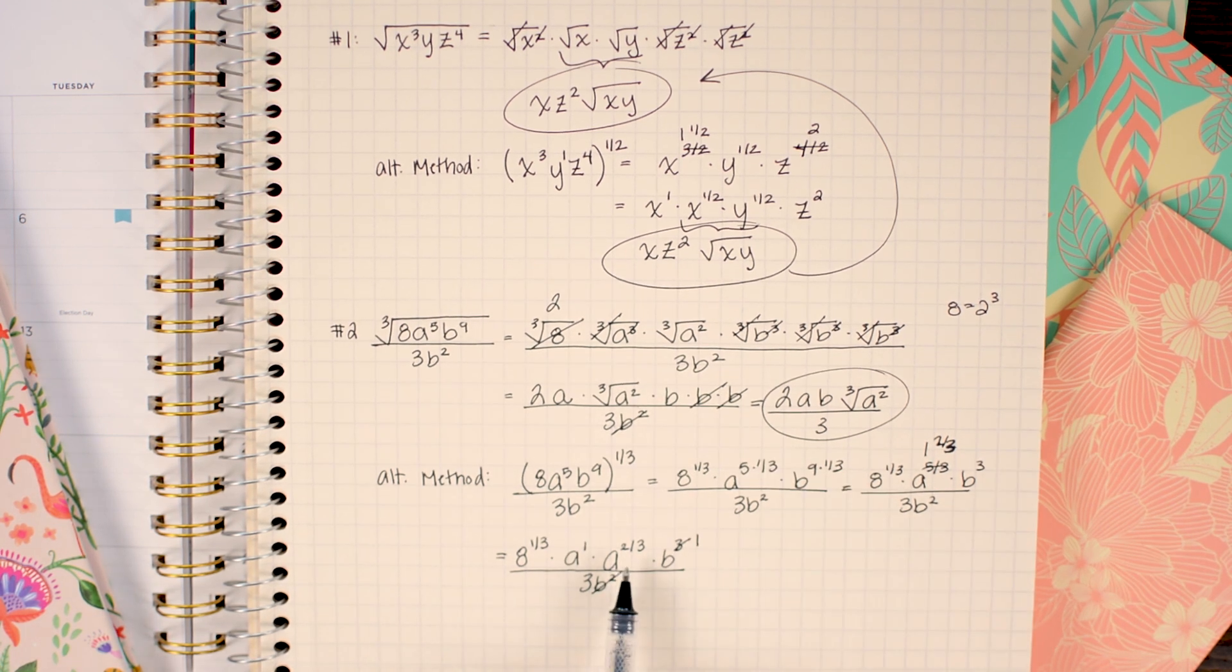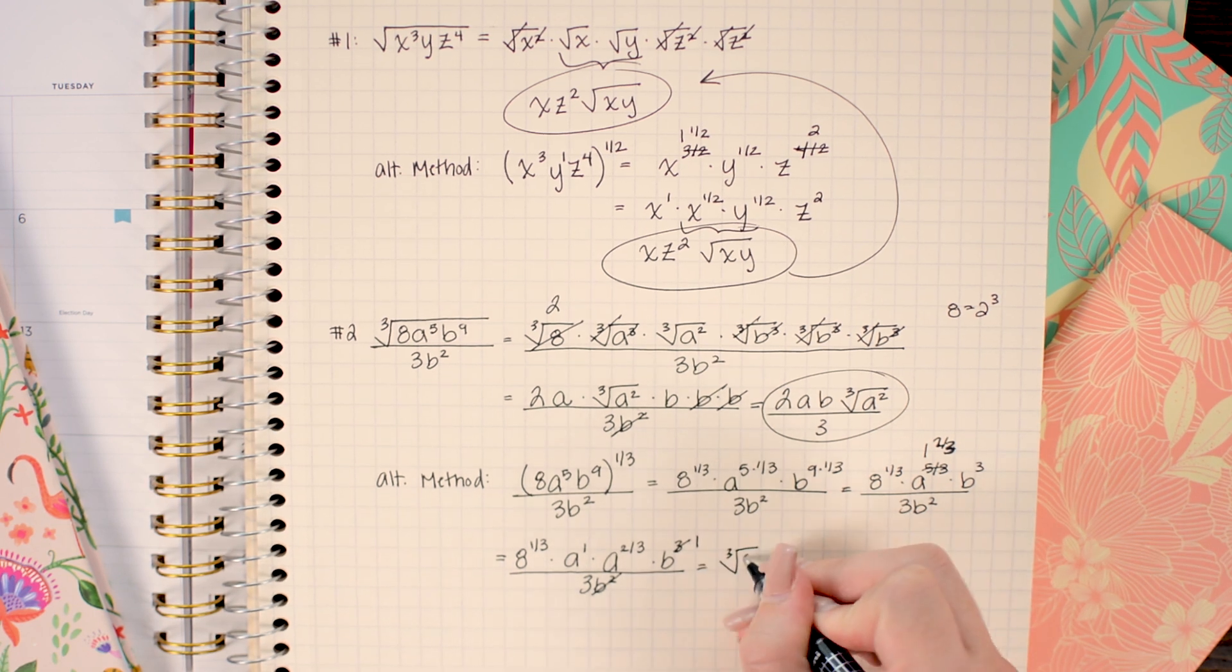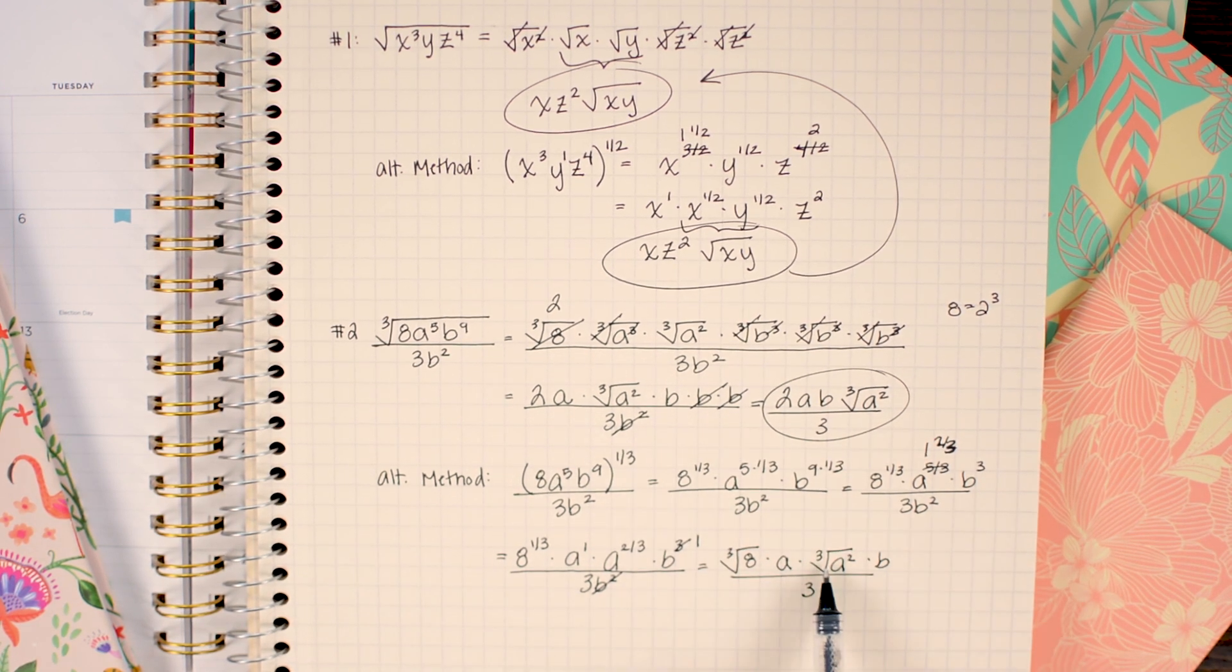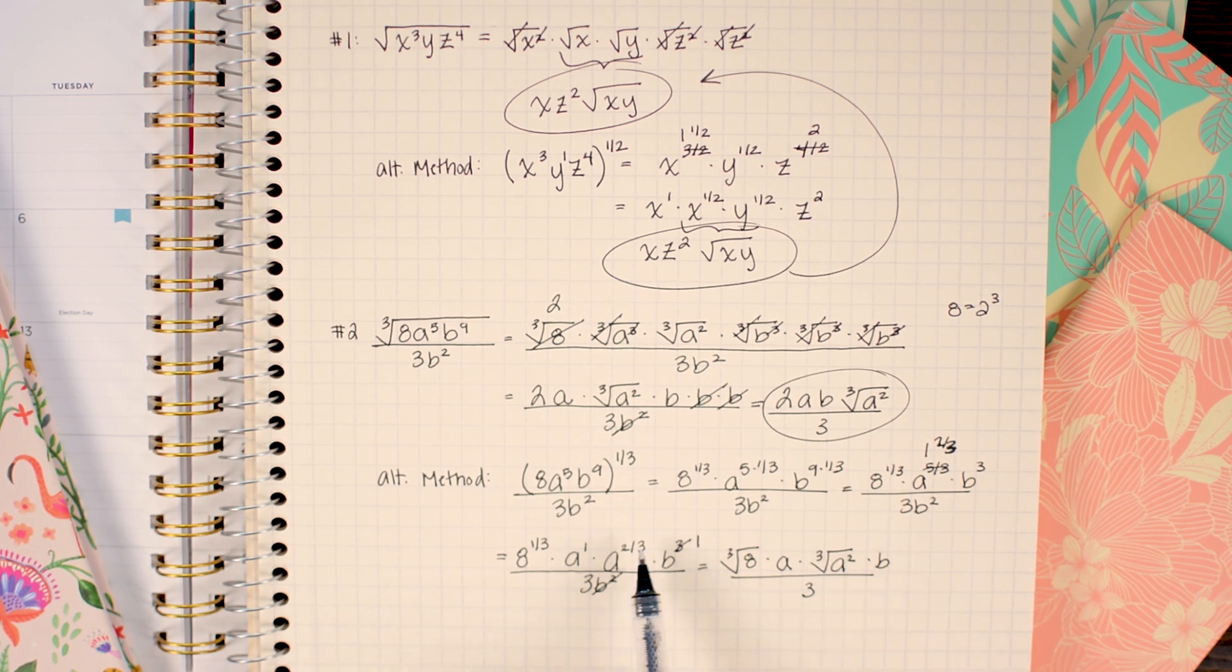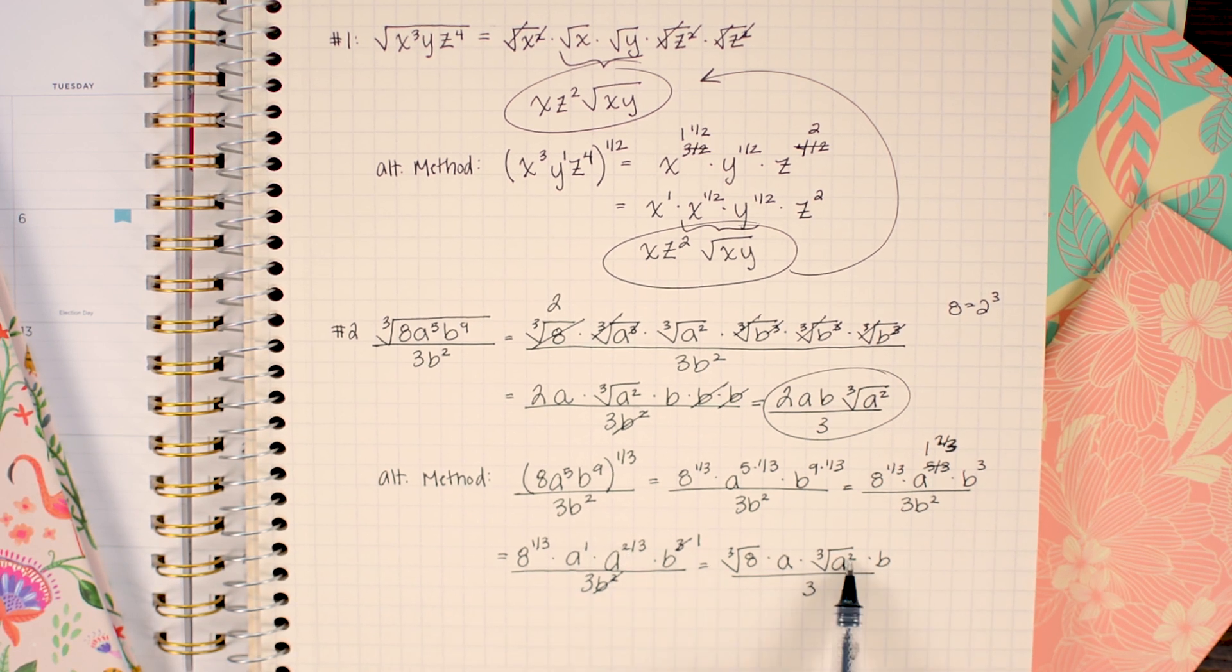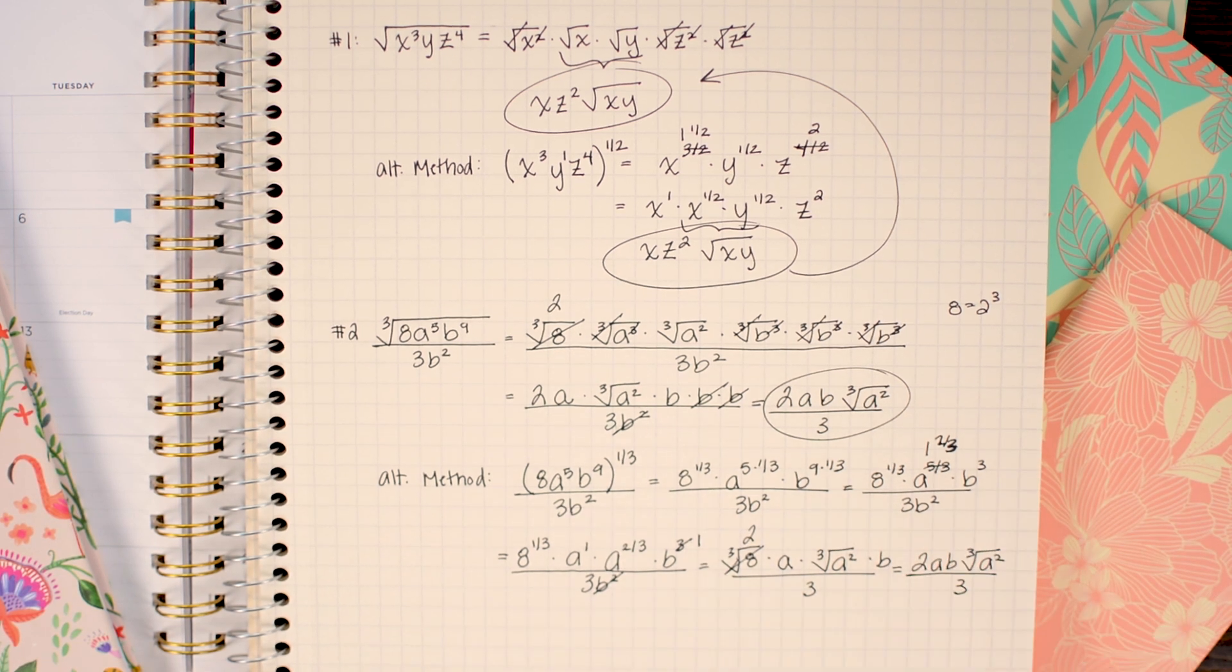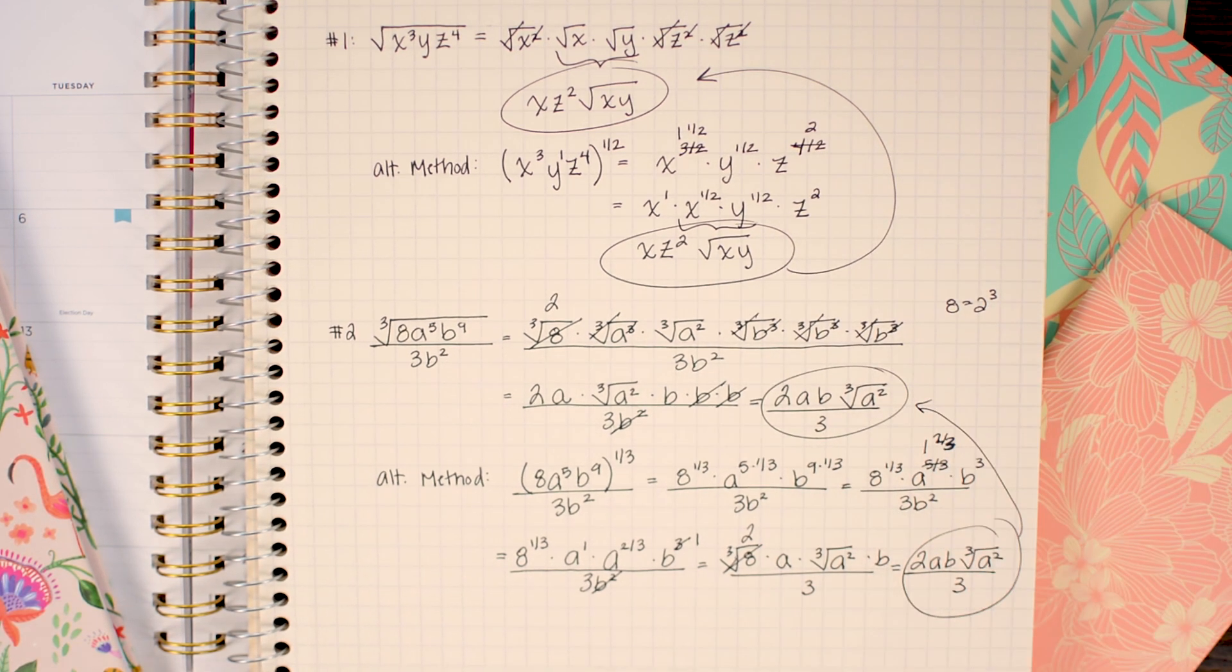Now I'm just going to reintroduce the cube roots back into the problem. So anything that has a fractional exponent with a denominator of 3 is going to get a cube root symbol. Notice how when I reintroduced the cube root symbol on the a, I kept the power of 2 on the a. So I still have a squared here. Now the last step is to take the cube root of 8, which we know is 2 and rewrite this in a nice pretty form. There you go. That is the same as we got up here when we used the radical notation method.